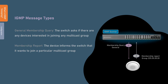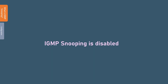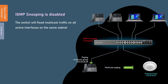IGMP snooping is a function that allows switches to monitor membership messages to learn about multicast group members and their connected interfaces. Switches use IGMP snooping to forward a specific multicast group traffic to only the member or members of that multicast group, instead of flooding the multicast traffic to all connected devices in the same subnet. Forwarding data only to the relevant ports conserves bandwidth and processing resources.